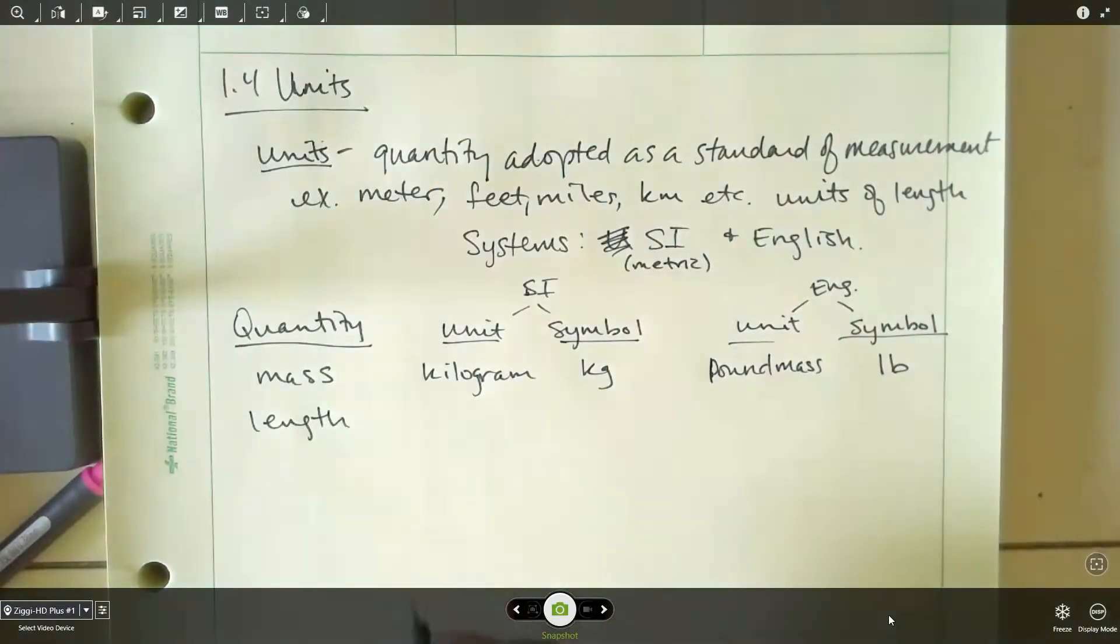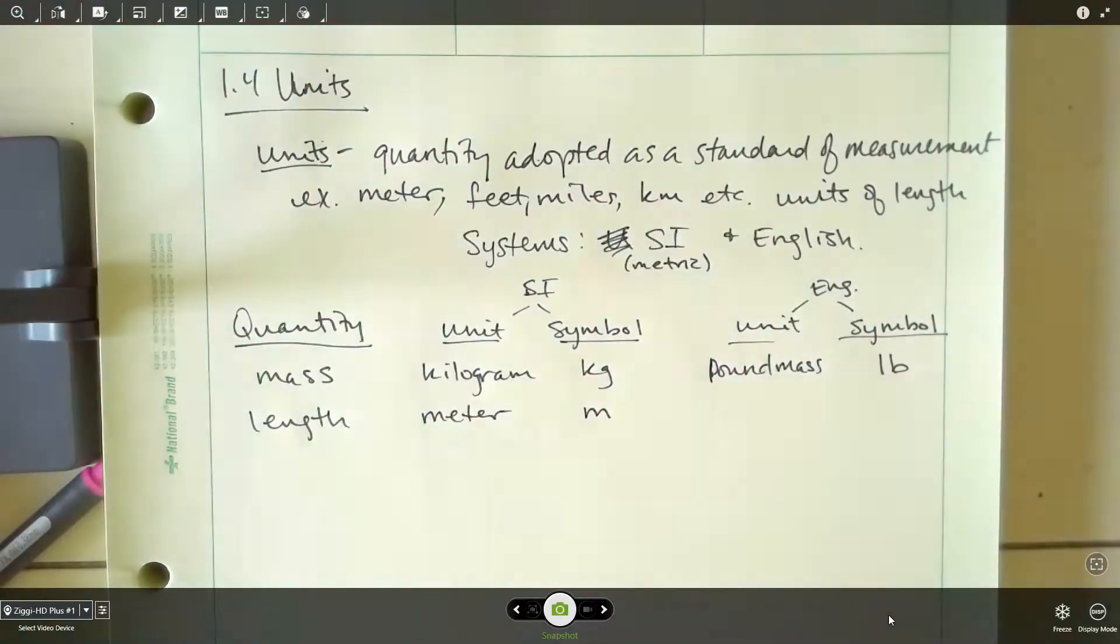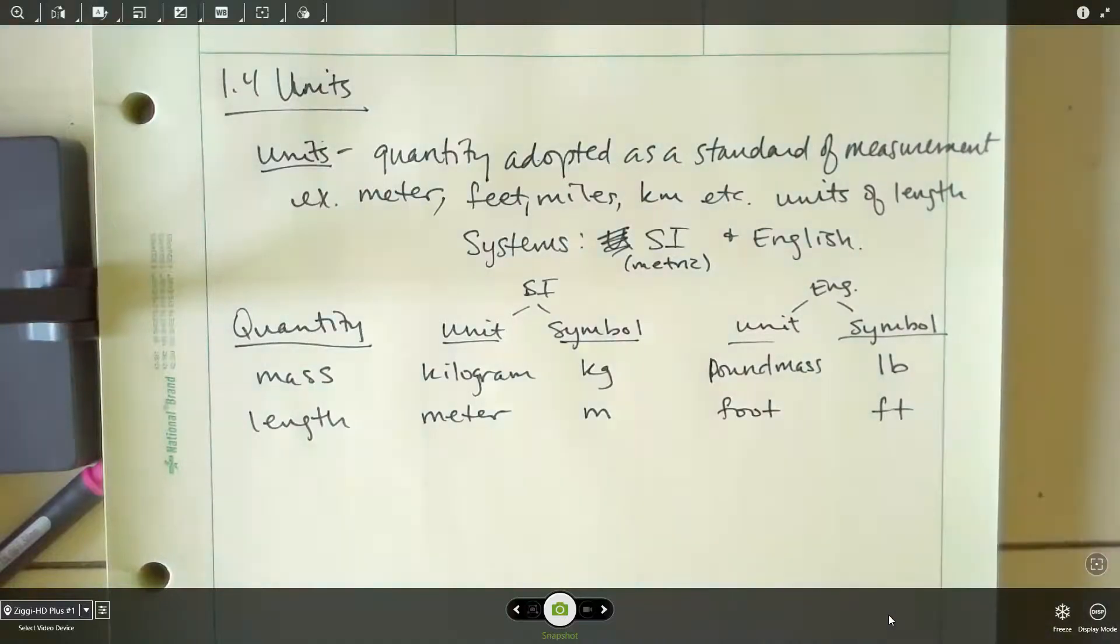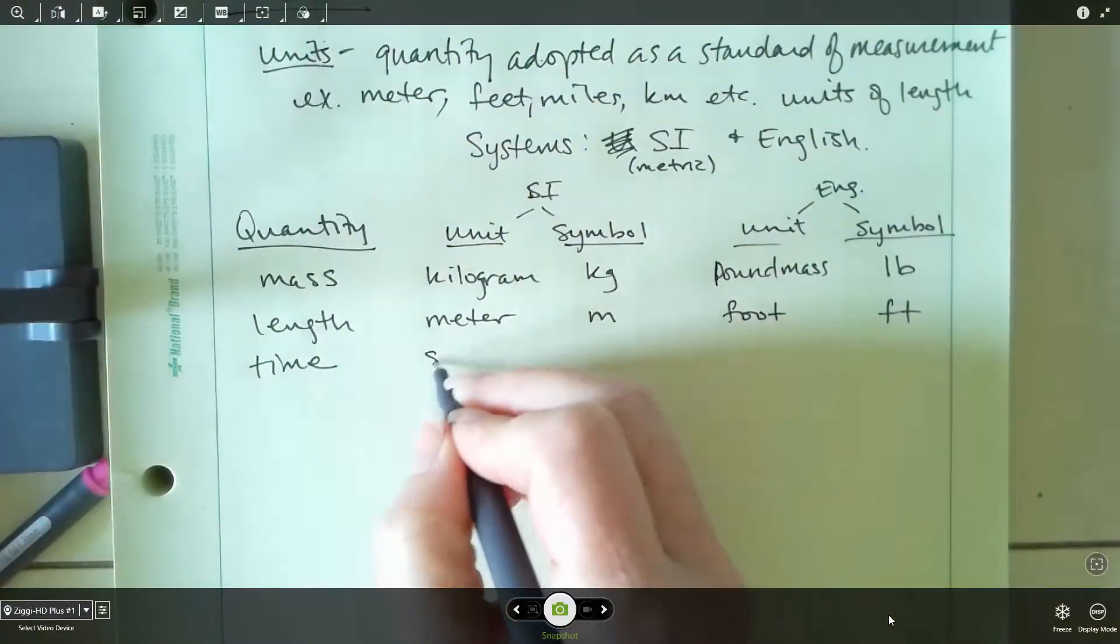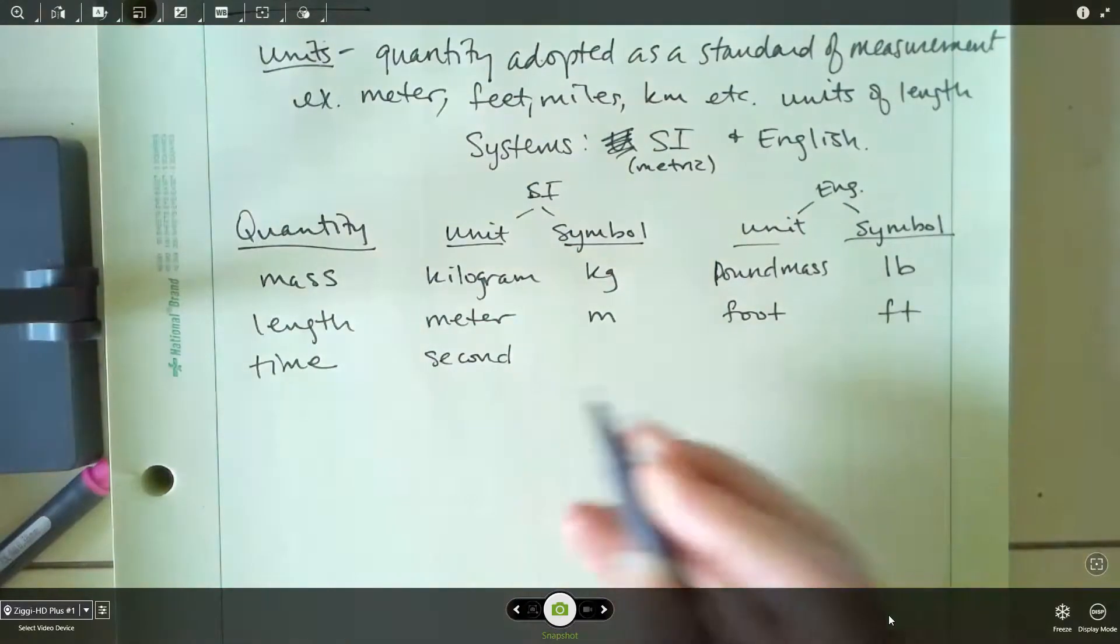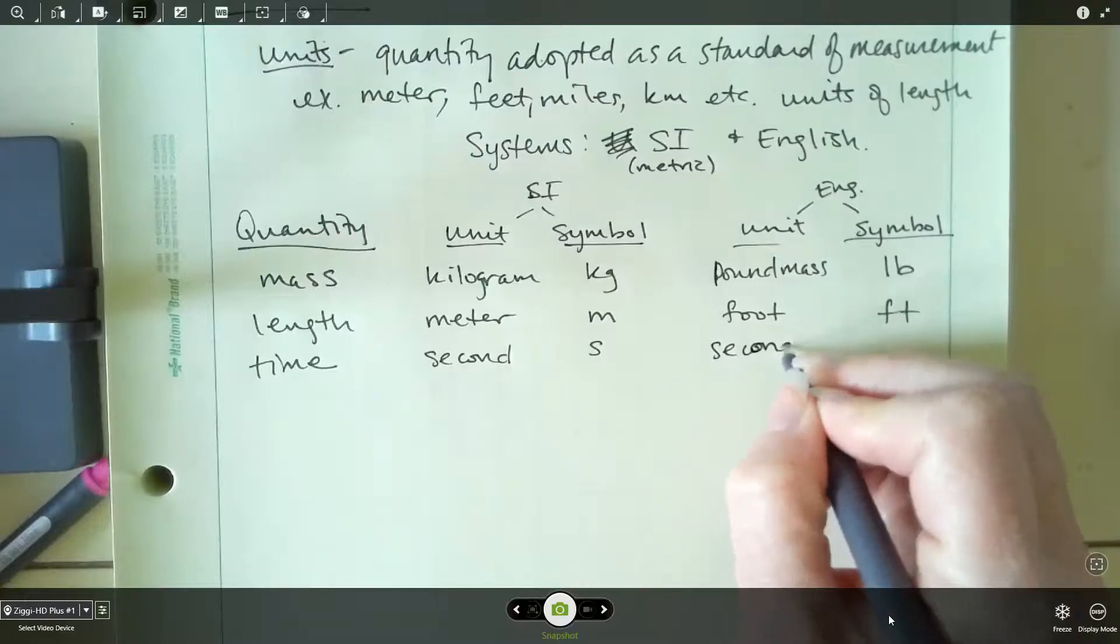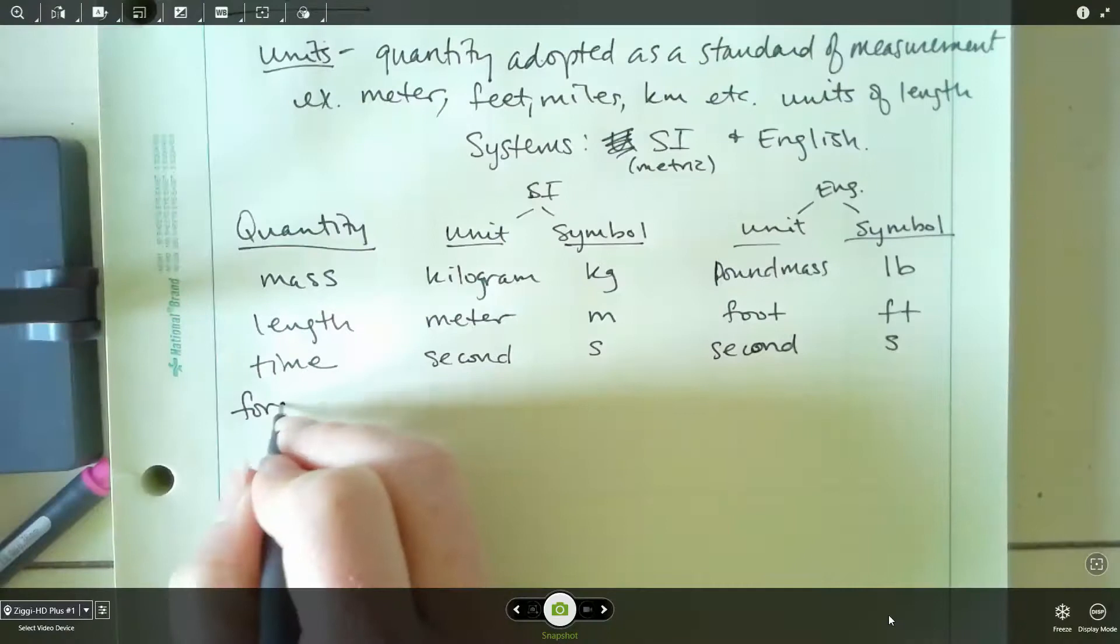Now for length, that's our quantity. If we're dealing in the metric system, we're going to have a meter. The symbol there is M. And in the English system, we would have a foot, FT. Two more quantities. The next will be time. So for time, that base unit is going to be a second. The symbol would be S. And then we have the same thing for the English system. So for this class, we'll use S for both.